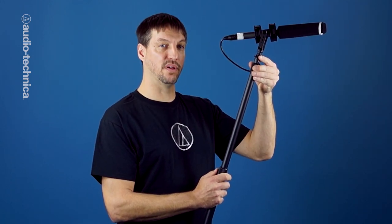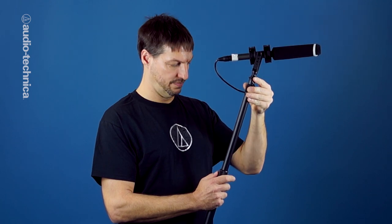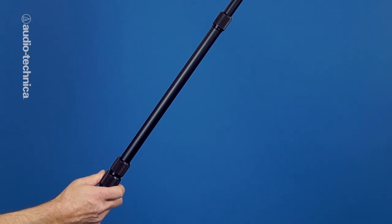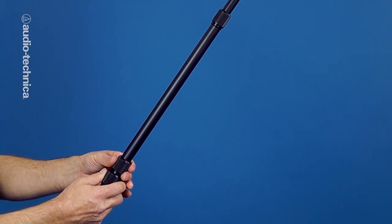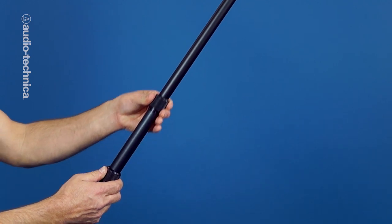When you extend a boom pole, first you want to slide each section out as far as it will go until you feel the stop. Then, back it in a couple of inches before you tighten it down. This is important so that each section has a little bit of overlap and gets supported in two places: the end of the inner tubing as well as the locking collar of the outer pole.